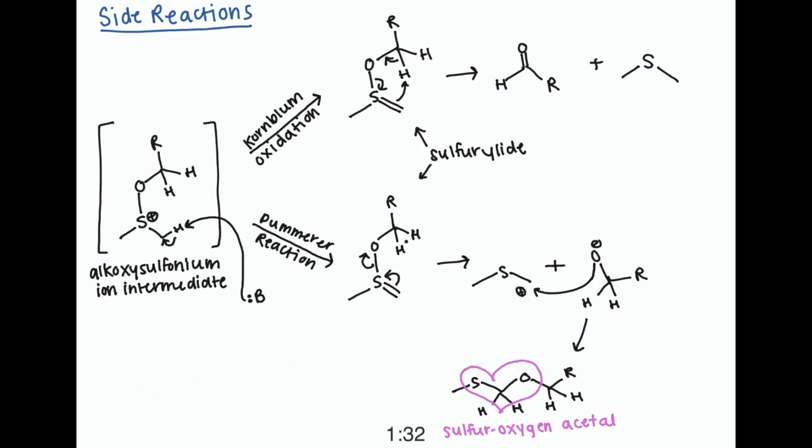Another really interesting side reaction is the Pummer reaction. So at the top here, we'll see starting from the alkoxysulfonium ion intermediate, the Kornblum oxidation proceeds through the sulfur ylide to give us that aldehyde and dimethyl sulfide.